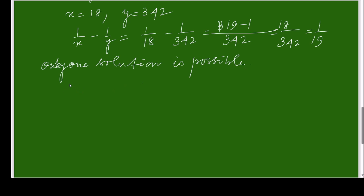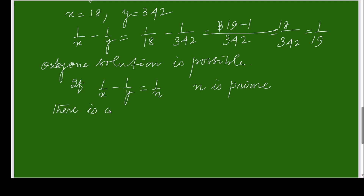A useful concept to add to your knowledge: for the equation 1/x minus 1/y equals 1/n, when n is a prime number, there is only one solution in positive integers x and y. I hope you liked it — thank you for watching.